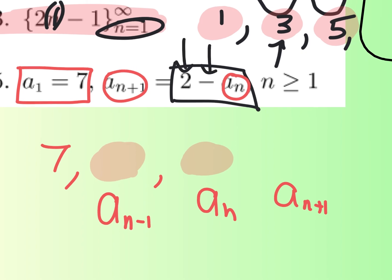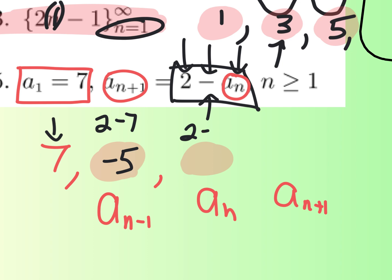Once you get the hang of it, it's not that bad. You take 2 minus the term. Seven is the term we have, so we take 2 minus 7, which would be negative 5. Did anybody guess negative 5? Then what do you do again? Take 2 minus the term, which in this case is negative 5. Two minus negative 5 equals 2 plus 5, which is 7. And look at that — it's just going to cycle back and forth between 7 and negative 5.